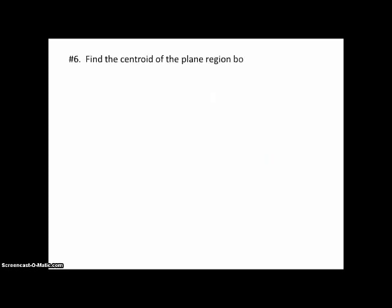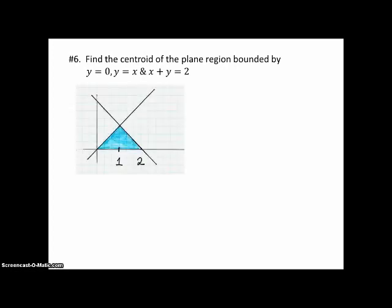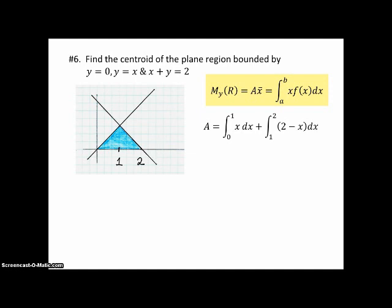Let's look at number 6 from the textbook: find the centroid of the plane region bounded by y = 0, y = x, and x + y = 2. The first step is to draw a picture. You can probably intuit that x-bar is going to be 1 right in the middle of the triangle, and y-bar will be closer to the bottom, so less than a half. The area requires two integrals: from 0 to 1 using f(x) = x, and from 1 to 2 using f(x) = 2 − x. Working out the antiderivatives, the area comes out to 1.